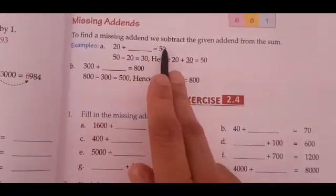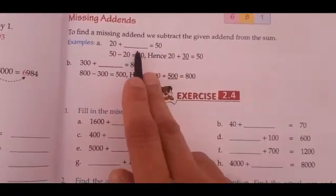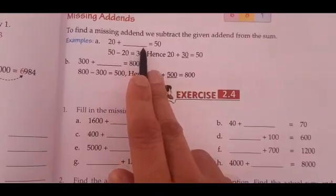So 50 minus 20 equals 30, hence 30 will be the answer. How to check it? You add 20 plus 30, it becomes 50.